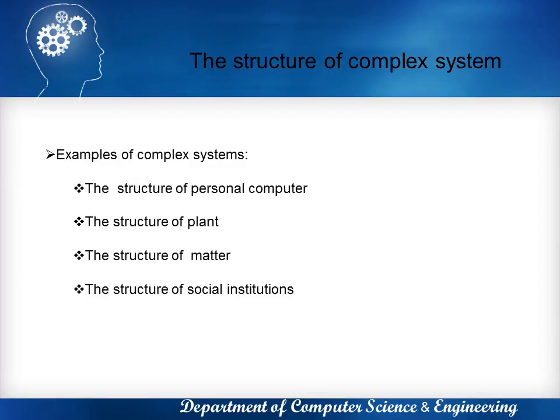Inside each cell we find yet another level of complexity encompassing such elements as nuclears and so on. Coming to the third example of complex system, the structure of matter. The study of fields as diverse as astronomy and nuclear physics provides us with many other examples of incredibly complex systems. Astronomers study galaxies that are arranged in clusters, and stars and planets are the constituents of galaxies.